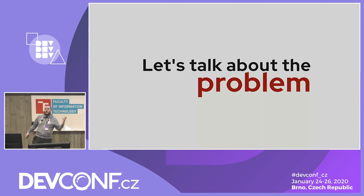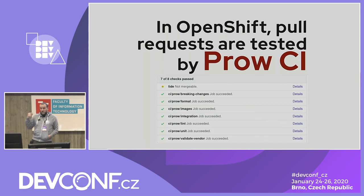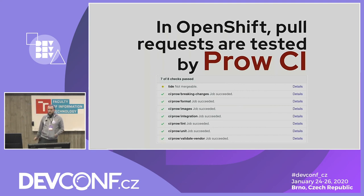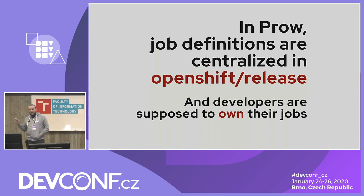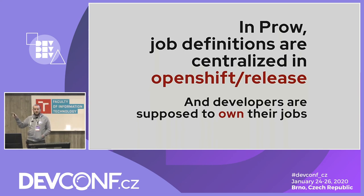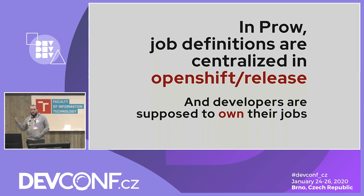Let's talk about the world before rehearsals existed, like a year ago. Some of you may know that in OpenShift, the CI system used there is called Prow. It's also developed and used upstream in Kubernetes. It's a cloud-native CI/CD system designed to run on Kubernetes. Contrary to more traditional CI systems like Travis or Jenkins, the definitions of what is supposed to be executed when something happens in the repository are stored separately.